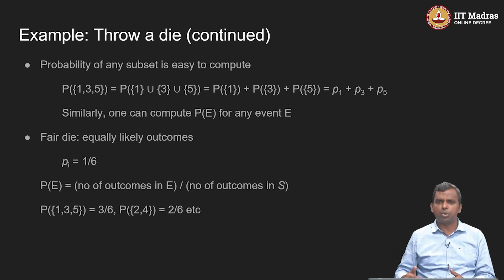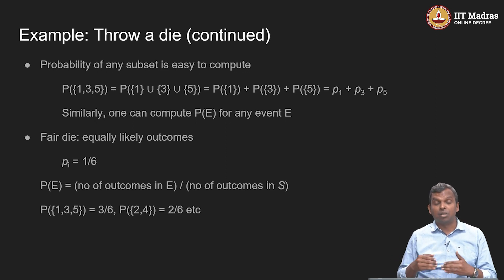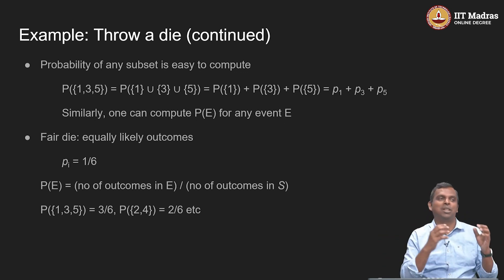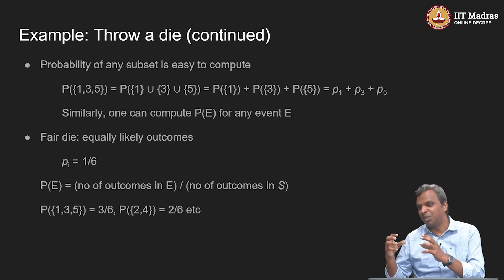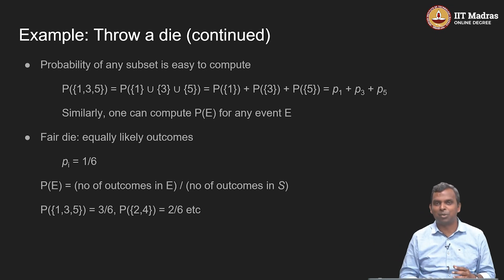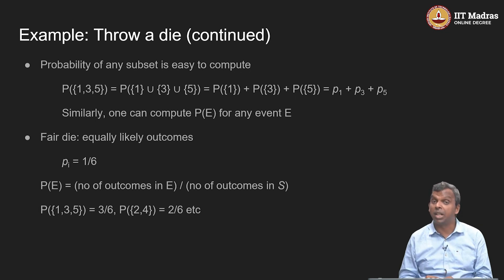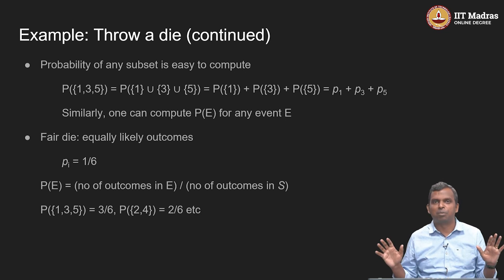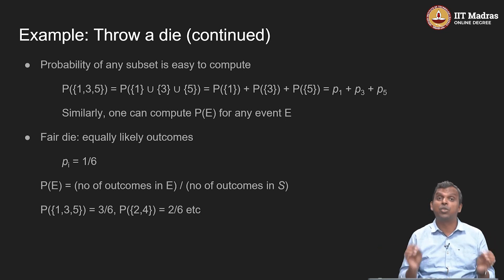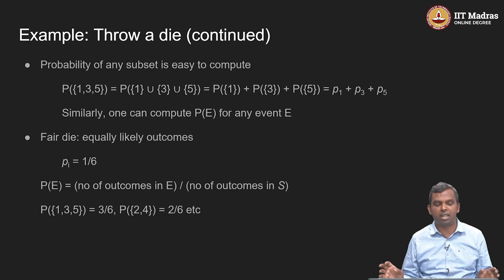The probability function becomes fully specified when you specify the distribution. You will see this word distribution used over and over again when people describe probability spaces — in fact, nobody will say probability space, they will just say distribution. I am working with the normal distribution, I am working with the uniform distribution — and that completely defines the entire probability space by defining the probability function properly. This notion is very, very crucial and it makes it simple to satisfy the axioms correctly.